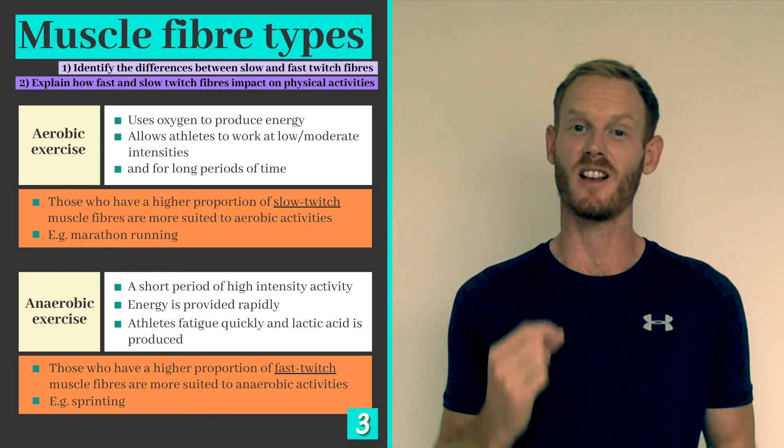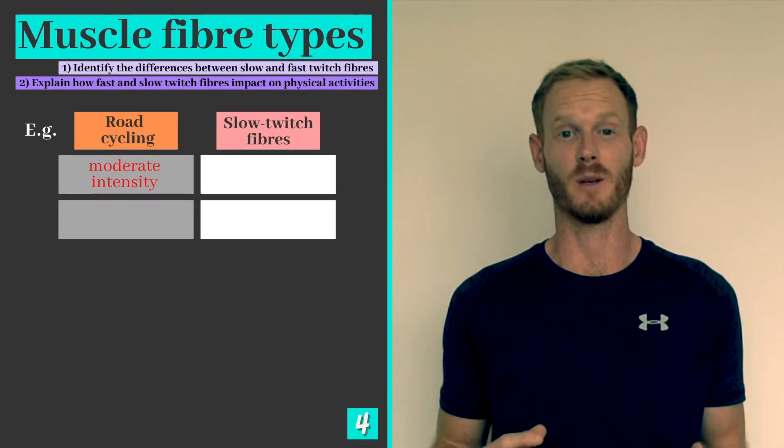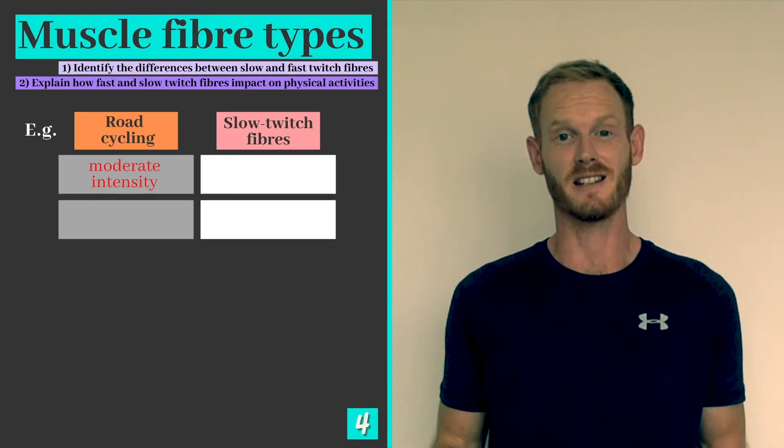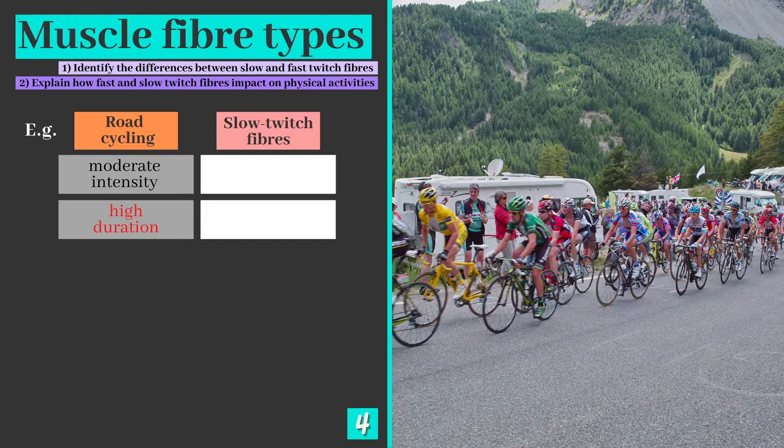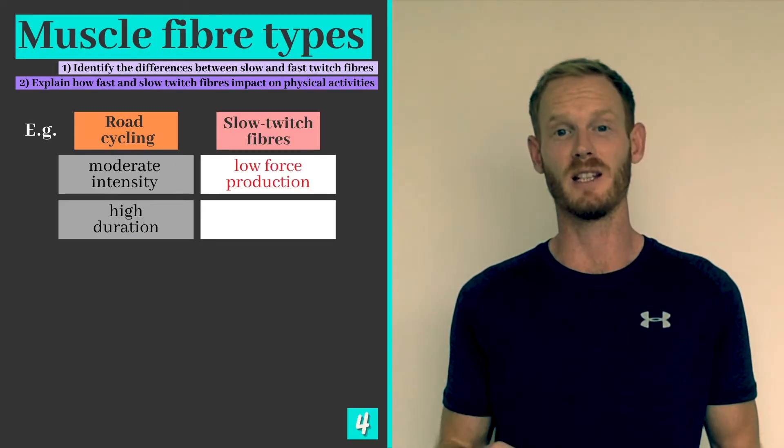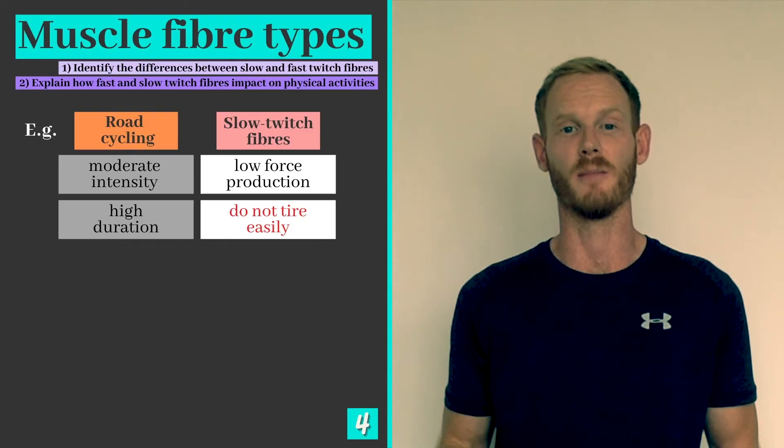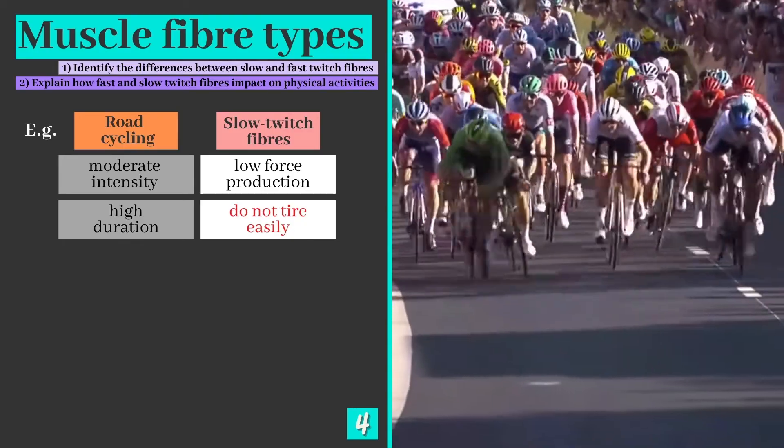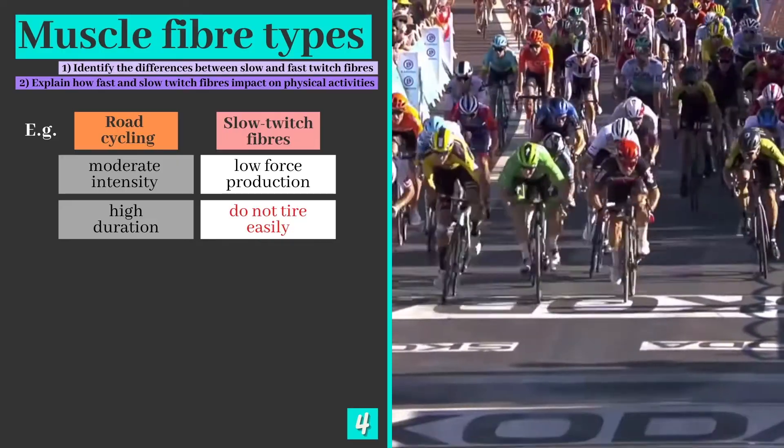I'd now like to present some examples from sport that illustrate the characteristics of each fiber type. Road cycling is a moderate intensity high duration activity with Tour de France race stages often exceeding 250 kilometers. It's therefore suitable for those who have a high proportion of slow twitch muscle fibers as they produce a limited amount of force but can continue to contract for long periods of time. During a hill climb or sprint finish, athletes recruit their fast twitch fibers as they switch over to an anaerobic energy supply.